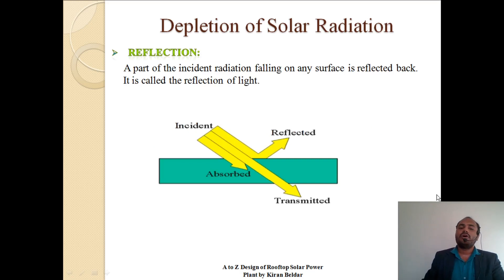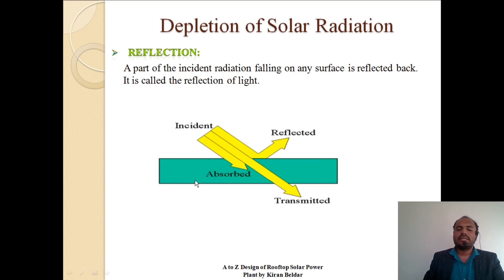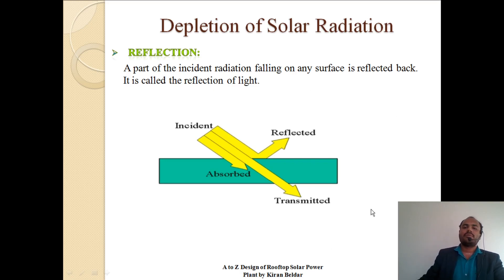Reflection: a part of the incident radiation falling on any surface is reflected back – this is called reflection of light. Whenever sun radiation falls over ice or a glass material, it is directly reflected; this phenomenon is called reflection of light. When an object receives solar radiation, some of the energy is absorbed, some is transmitted through the object, and some is reflected by the object. This is the fundamental phenomenon of depletion of solar radiation.